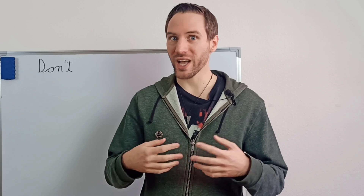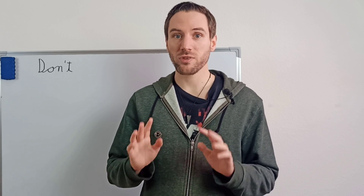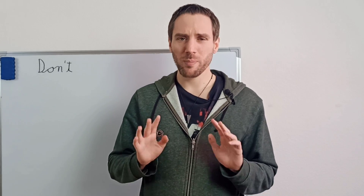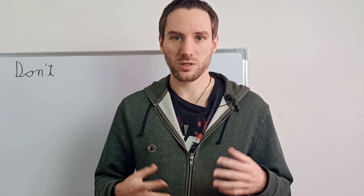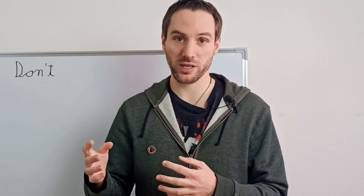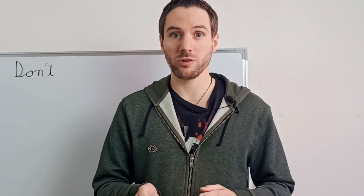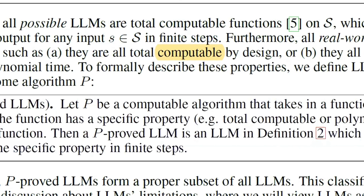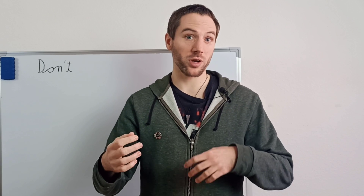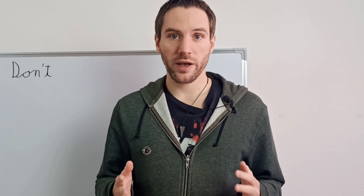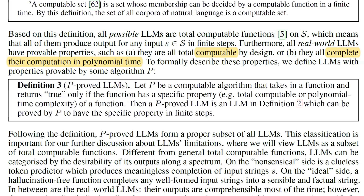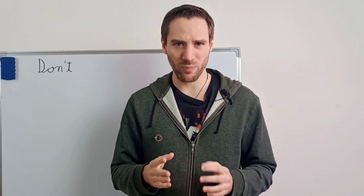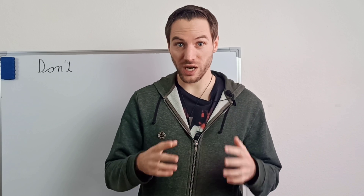The paper also defines the p-proof LLM. The algorithm p defines LLMs mathematically so we can continue calculating with them. It's based on LLMs being computable — meaning they always produce an output for a given input. LLMs also complete their computation in polynomial time, which basically means that if the input gets longer, it takes longer to produce an output, but they will produce an output eventually.